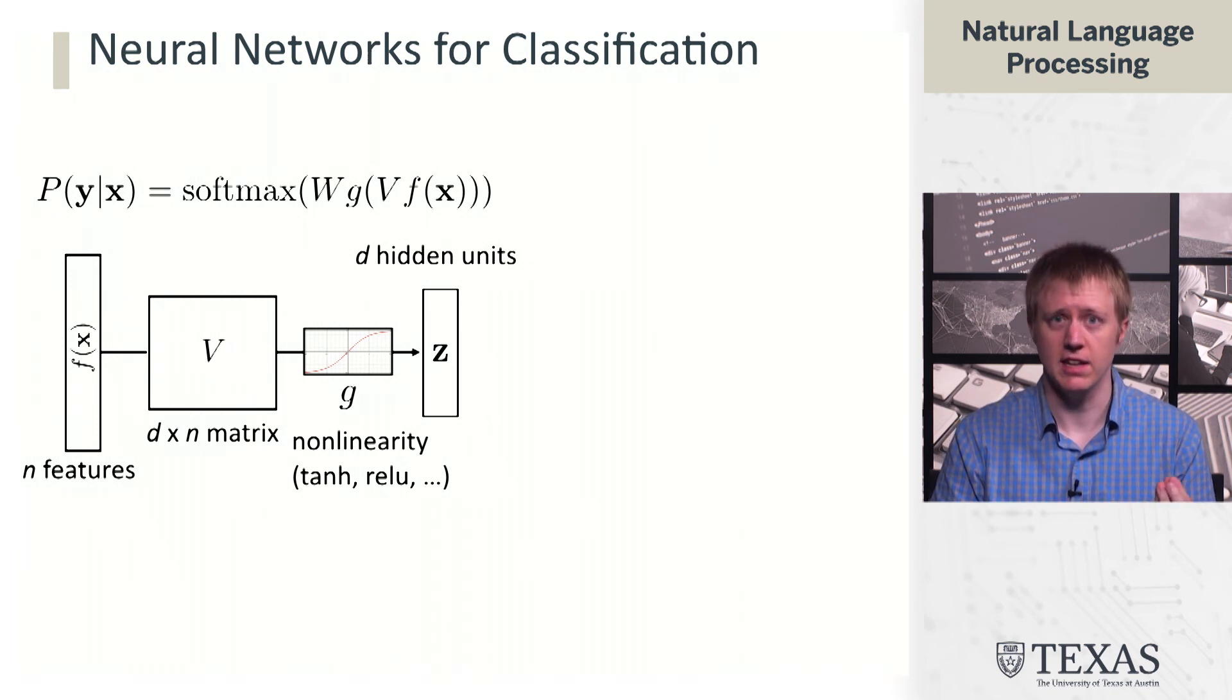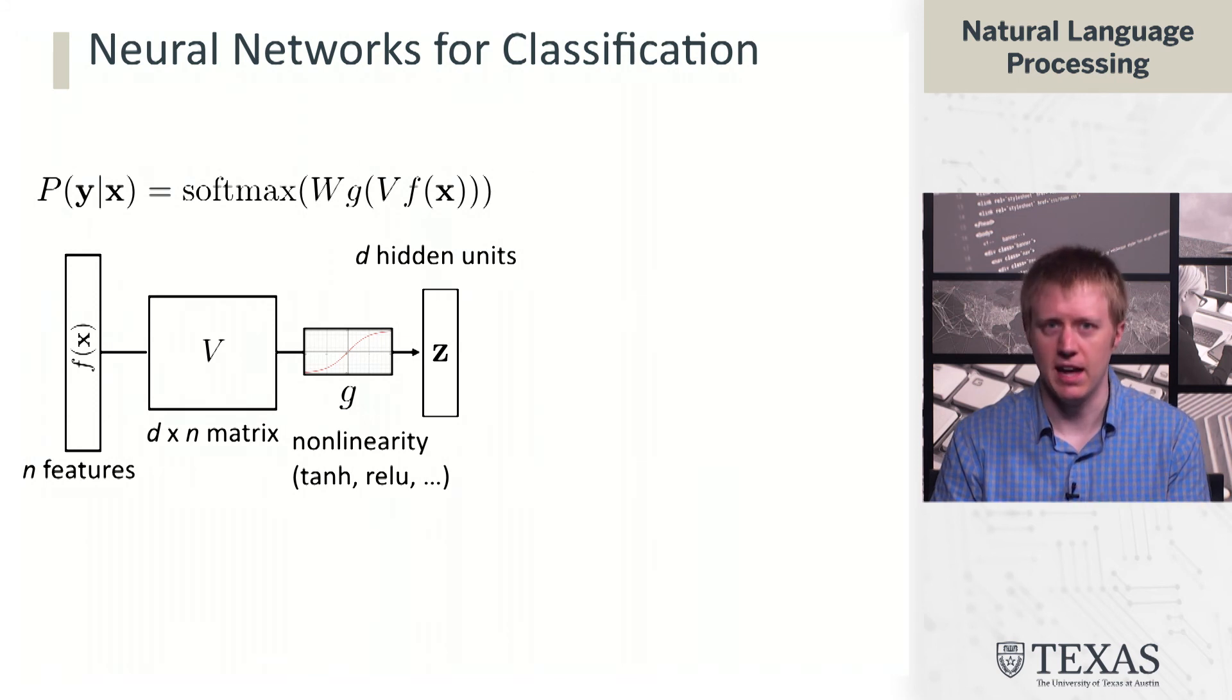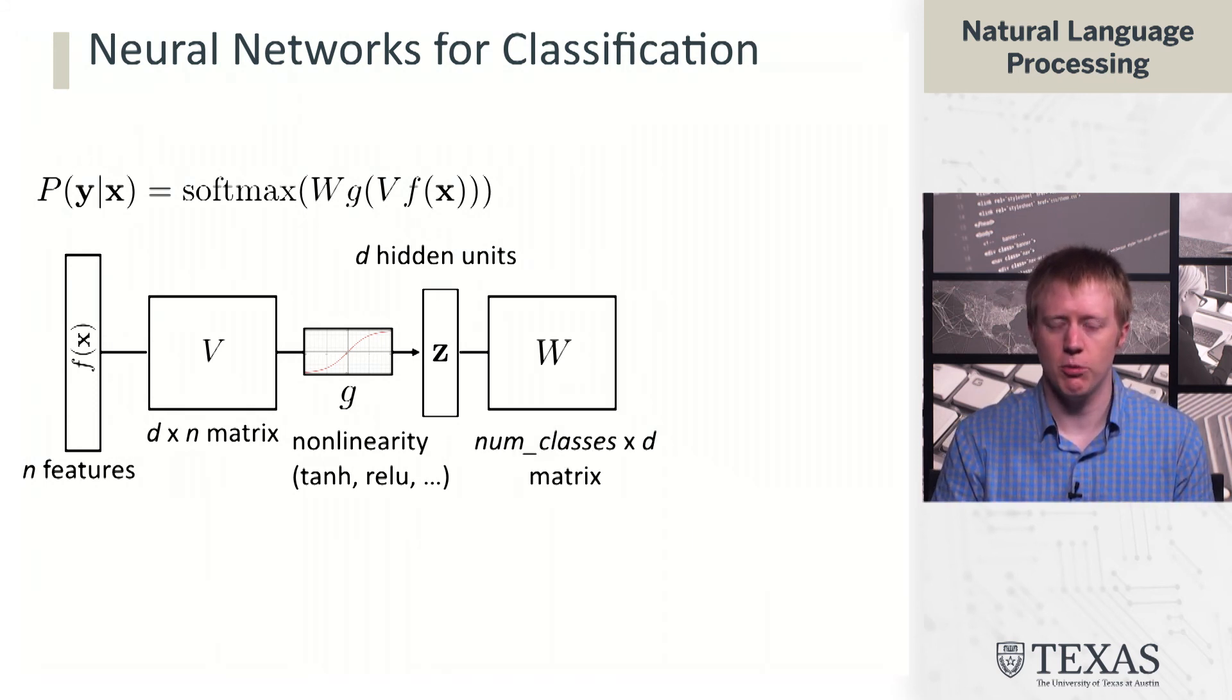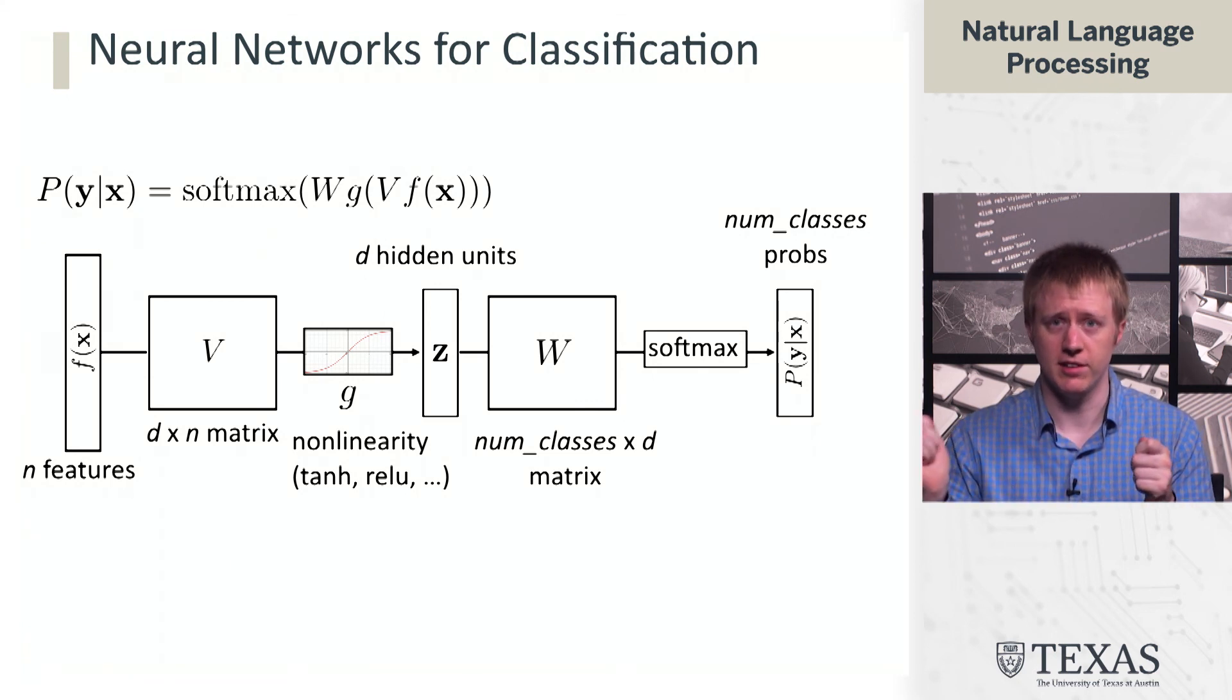That gives us a vector of d hidden units. This is our latent feature space z. It might be the same size as n, it might be a lot less. Then we multiply by W, which is our num classes by d matrix. The sizes of these matrices have to agree with the sizes of the layers in order for the operations to work out. We apply a softmax and get our vector of probabilities, which is num classes long.